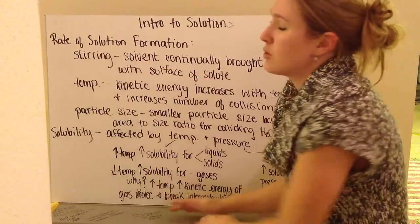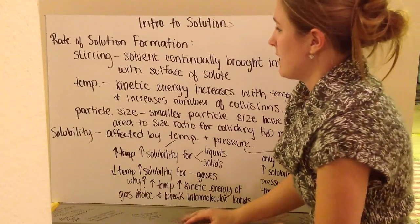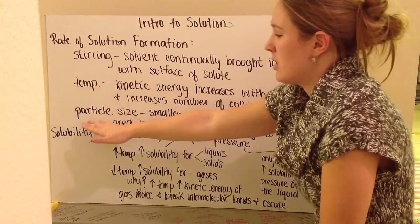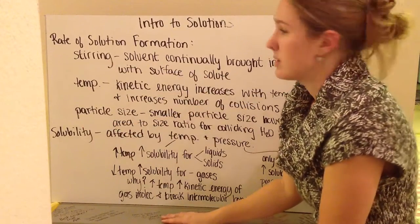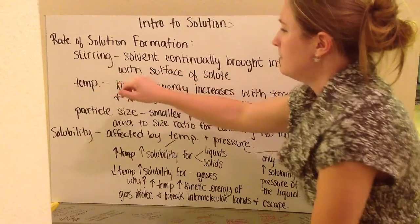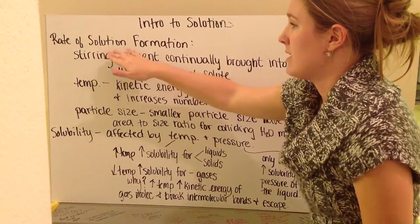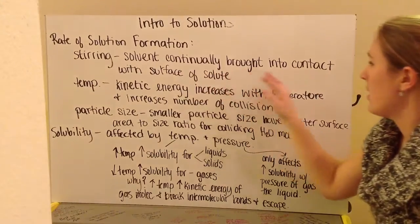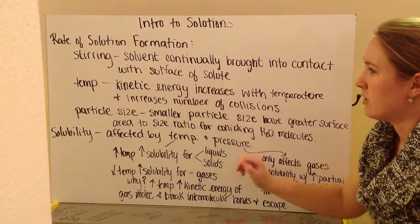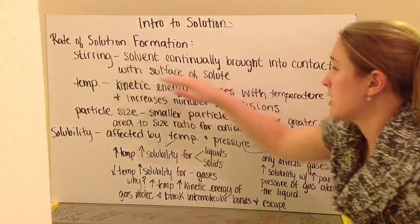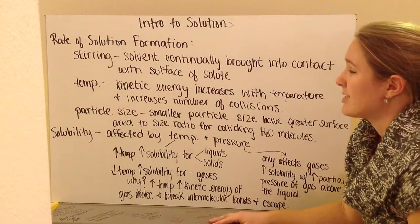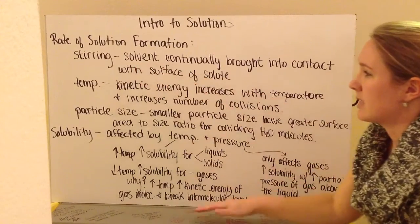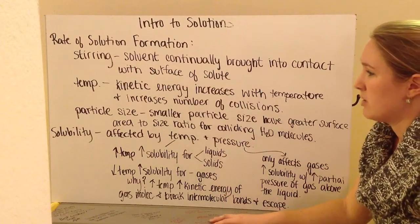To make solutions, their rate of how quickly they can be made is affected by a couple of different things. First of which is stirring. Then we have temperature and then the size of the actual particles. With stirring, the reason that stirring is going to have an influence on the rate is that the solvent is going to be continually brought into contact with the surface of the solute. Again, solvent and solute you should have been able to define from before, so I'm going to leave that to you. But your solvent, new solvent, is going to continually be brought into the surface of the solute.